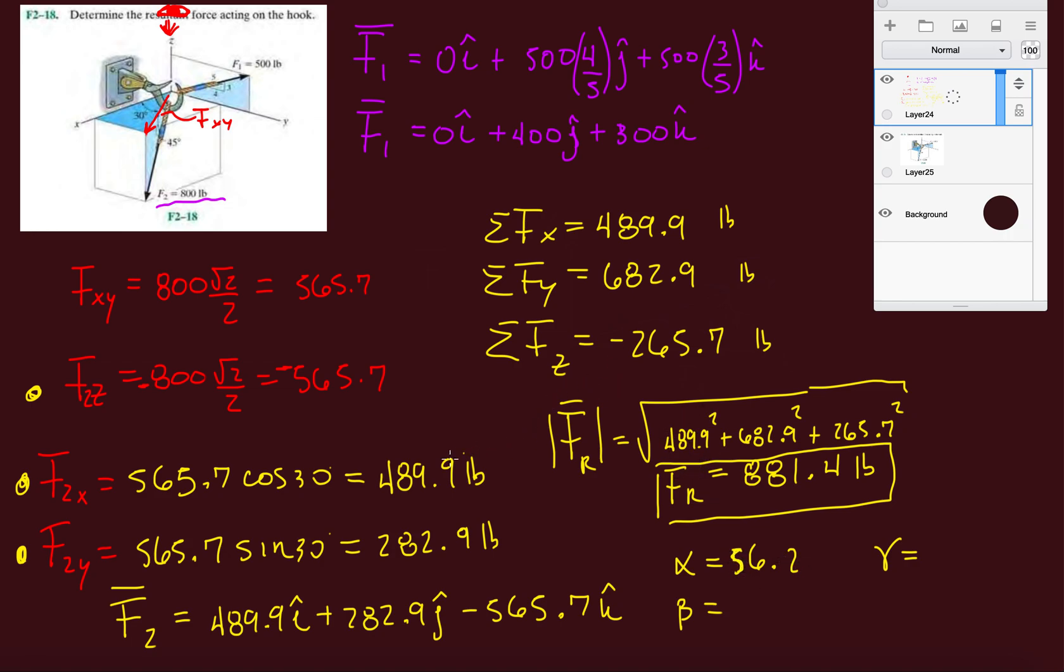Alpha, we know that's the angle that the force makes with the x-axis, so it's going to be inverse cosine, take your x component of that resultant, 489.9 divided by the magnitude 881.4, and I get 56.2. Alpha is inverse cosine of FX over magnitude F. Beta is FY divided by magnitude, and then gamma is the z-axis, FZ over F. So inverse cosine 682.9 divided by 881.4, beta is 39.2. Last but not least, gamma will be minus 265.7 over 881.4, so 107.5 degrees, and we're done.